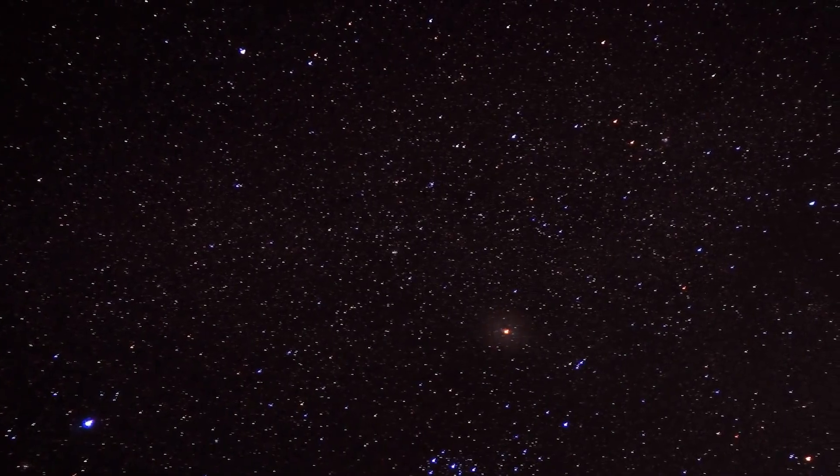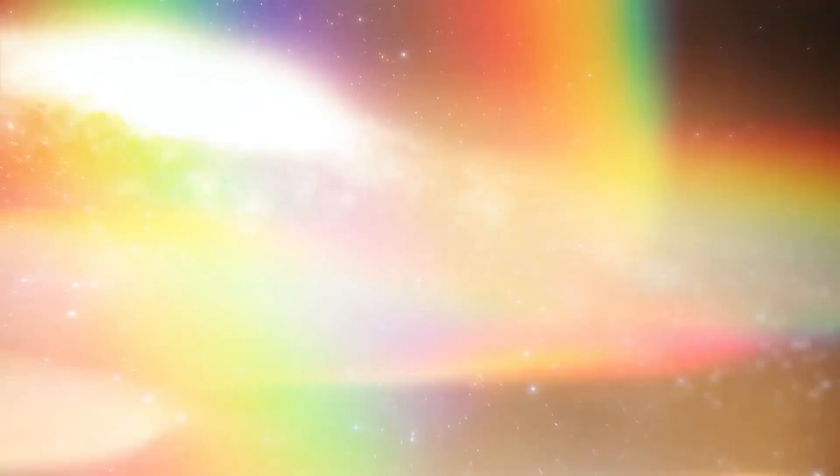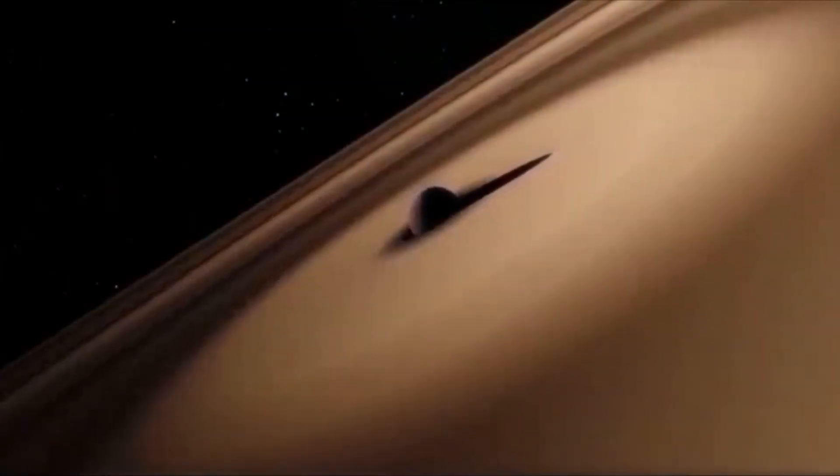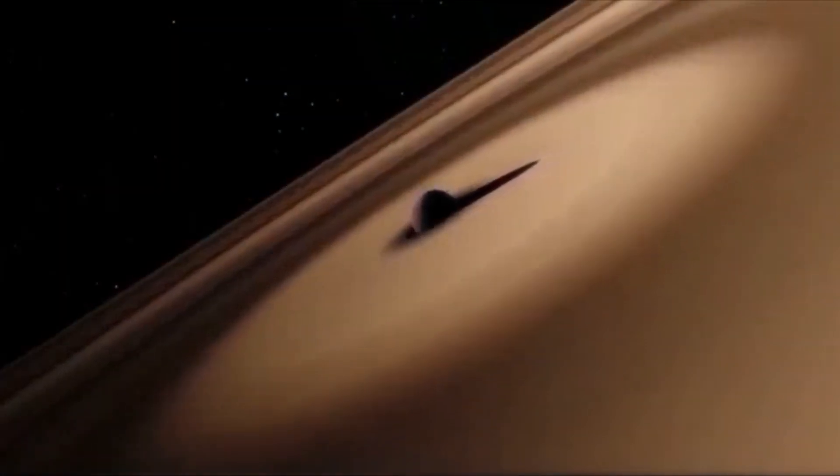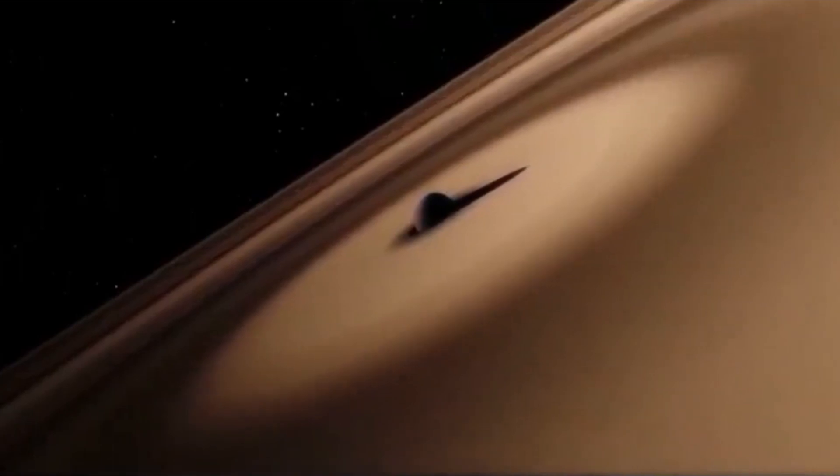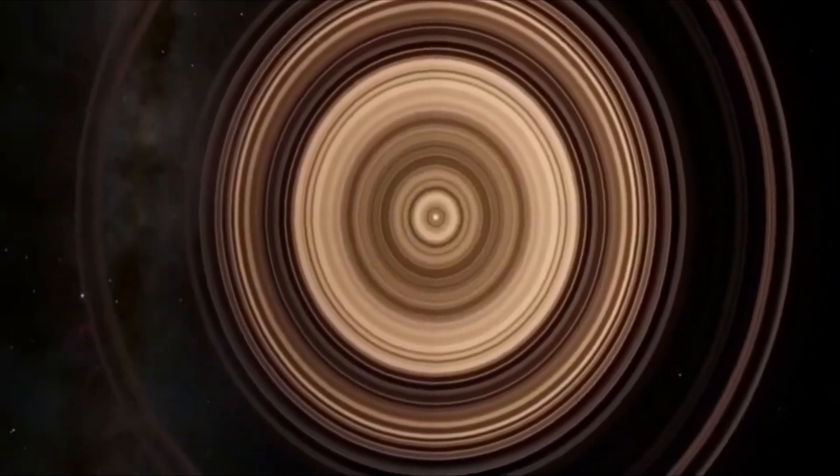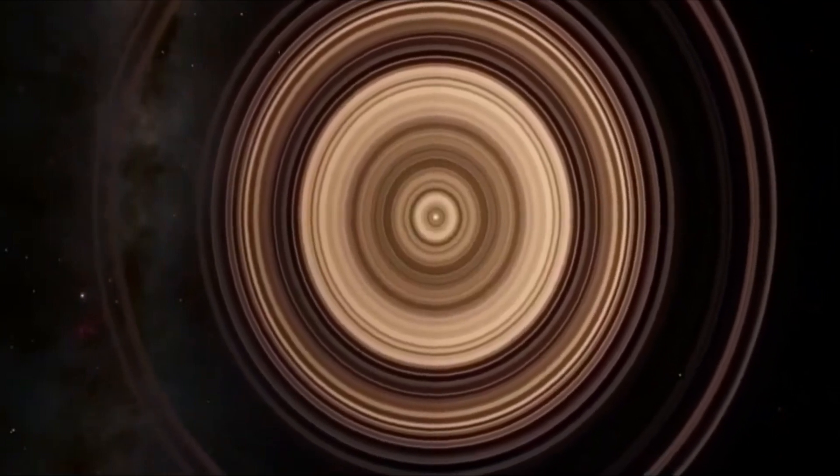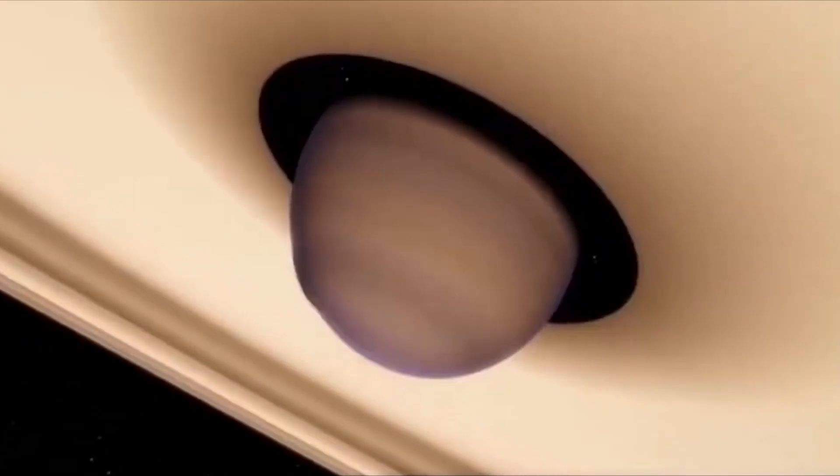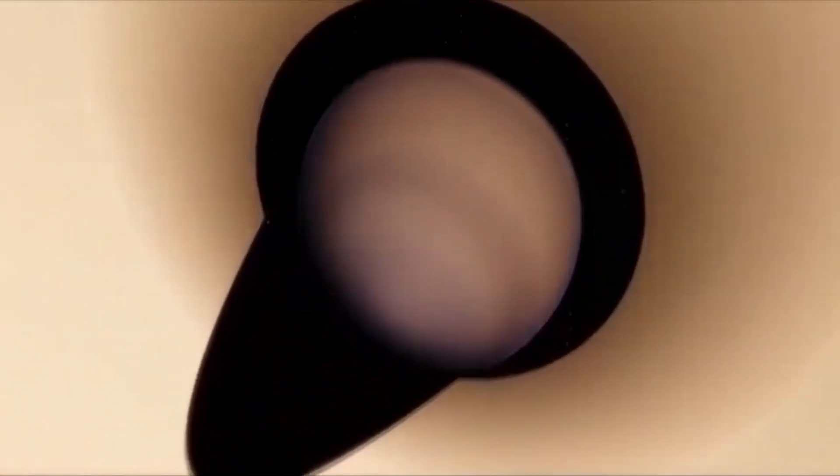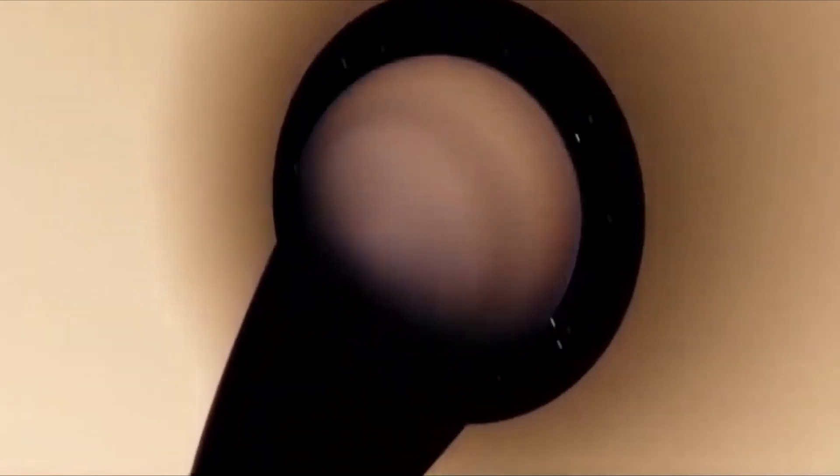Now let's talk about the possible origin of the ring system of J1407b. The current theory is that the rings of Super Saturn were formed from the debris of a collision between two large objects, such as moons or dwarf planets. This theory is supported by the fact that the ring system is so large and thick, as well as the fact that there are gaps in the rings, which may be caused by the gravitational pull of large objects within the ring system.